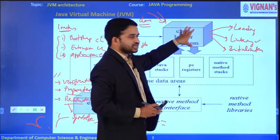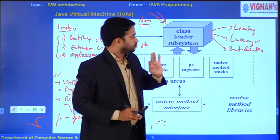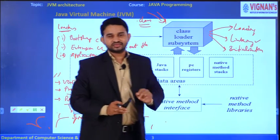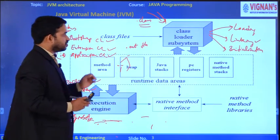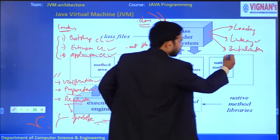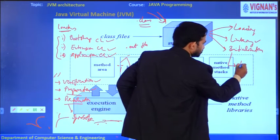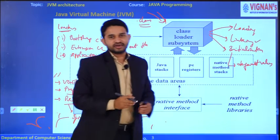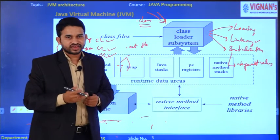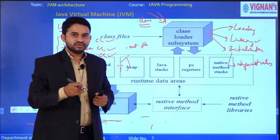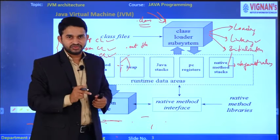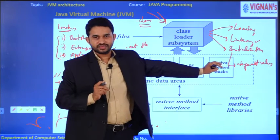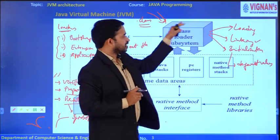The third activity of the class loader subsystem is initialization. It allocates default values to our variables — for example, the pi value 3.1415. For static variables declared in the program, default values are allocated during initialization.